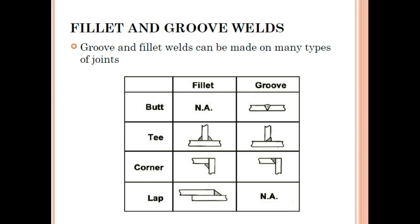Groove and fillet welds can be made on many types of joints. For a butt joint, a groove weld is used. For a T-joint, you can use either a fillet or a groove weld. For a corner joint, either a fillet or groove weld can be used. For a lap joint, a groove weld is not applicable — only fillet. When configuring a joint, you must prepare it appropriately; for example, if it is a corner joint requiring a groove, you need to do the groove preparation.